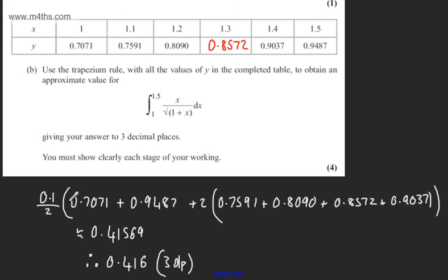So what we've done here is simply use the Trapezian rule. It's half multiplied by the strip width, which is 0.1, multiplied by the first plus the last, plus two lots of what's left added up in the middle, and then we've given our answer to three decimal places. Four marks in total.